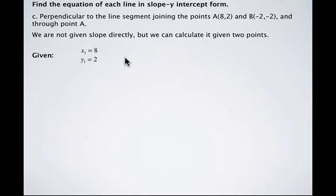x₂ is -2, and y₂ is -2 as well. So when we substitute into our formula for calculating slope of the line segment...